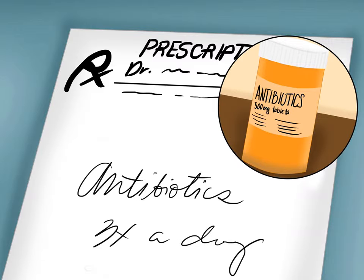Ask about antibiotics. Most of the time with a staph infection, you will need to take a round of antibiotics. One reason staph is so dangerous is because some strains are becoming resistant to certain types of antibiotics. Typically, you'd take cephalosporins, nafcillin, or sulfa drugs. However, you may need to take vancomycin instead, which is less resistant.